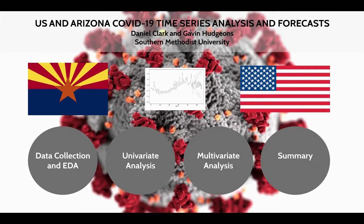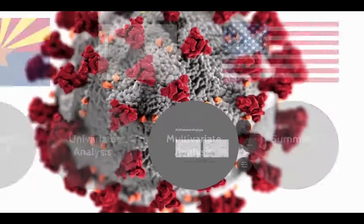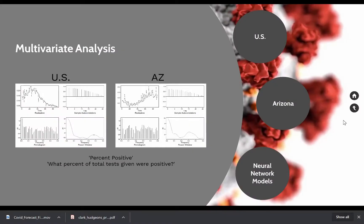So that was our univariate. Next we went into a multivariate analysis. We are still predicting against positive percentage for both the US and Arizona.